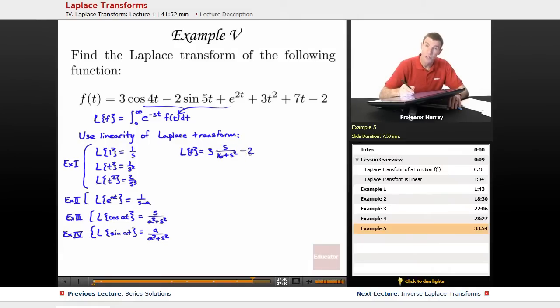Minus 2 times the sine of 5t. Well, sine gives me a over a squared plus s squared. a is 5, so 5 over 25 plus s squared.